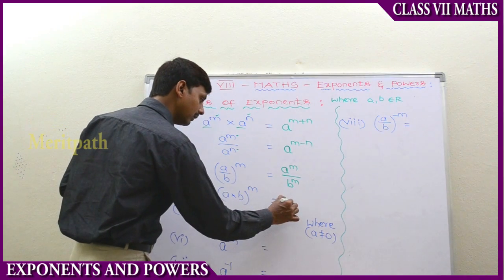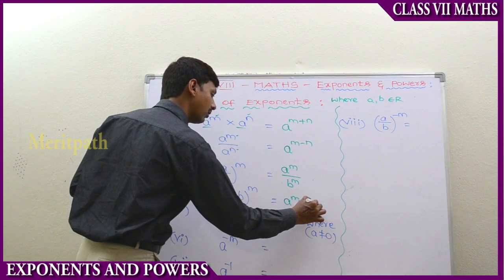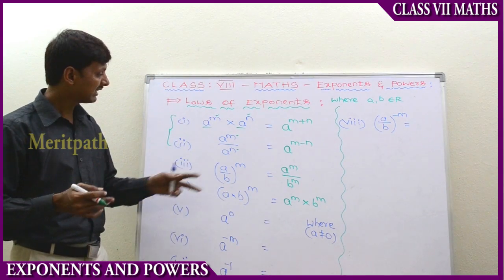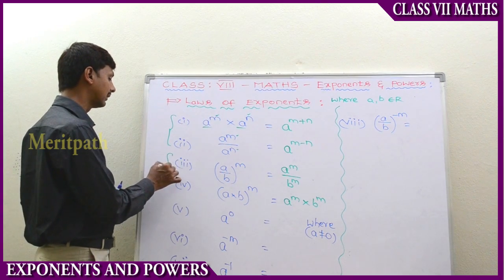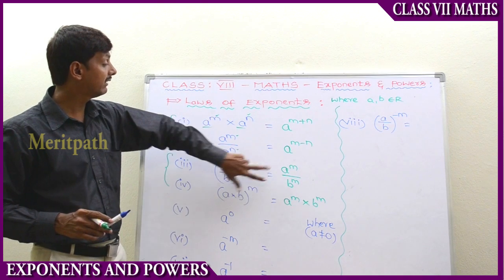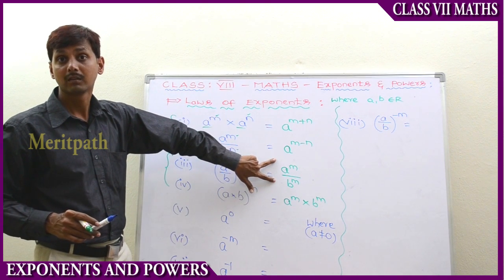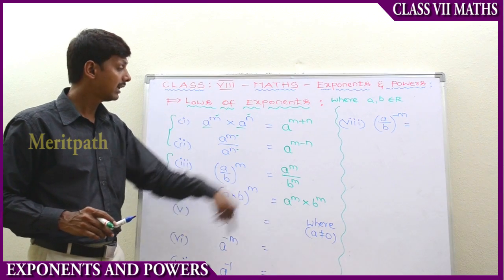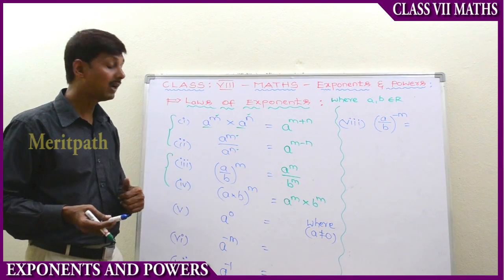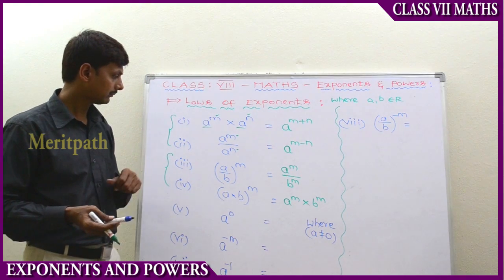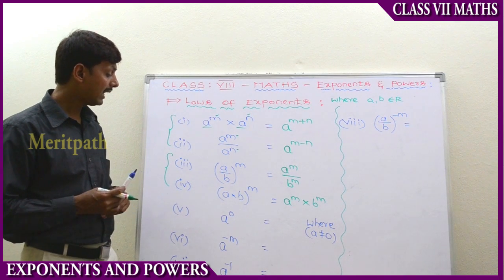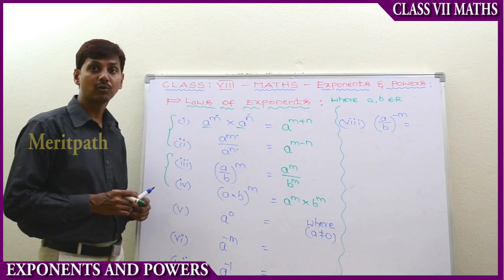For a by b to the power of n, it becomes a power n by b power n. Similarly, for multiplication, a into b to the power of n becomes a power n into b power n. There is a common relation between rules three and four: when there is division or multiplication, we apply the exponent to both.